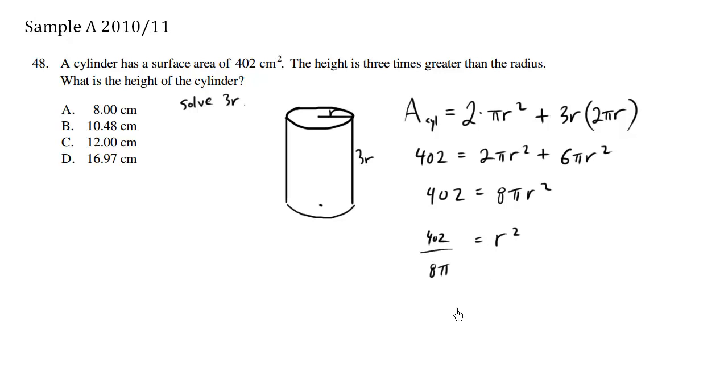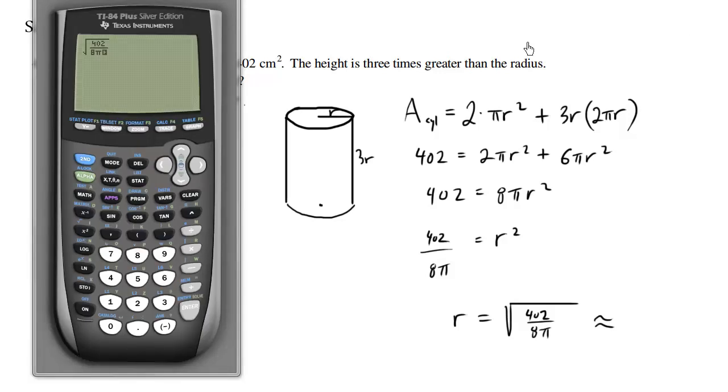And then we can just simply take the square root. We're only interested in the actual positive value because we can't have negative radiuses. So r is equal to the square root of 402 divided by 8pi, which is approximately 4.0.